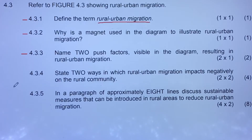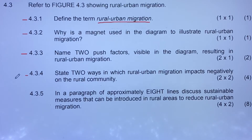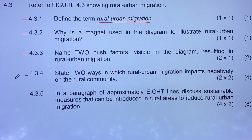Question 4.3.4 asks us to state two ways in which rural-urban migration impacts negatively on the rural community. The first way is that there will be no one to attend to the farmhouses — farmhouses are going to be left unattended or empty.